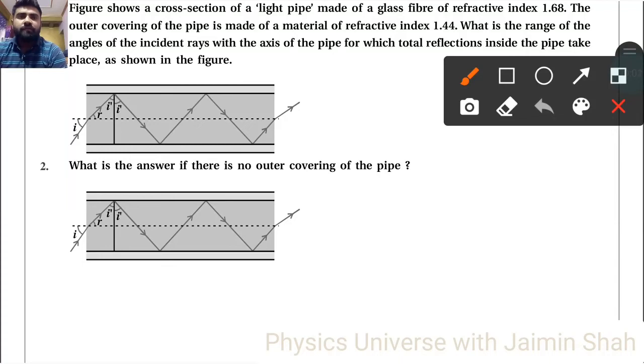This shows a cross-section of a light pipe made of a glass fiber of refractive index μ₂ = 1.68. The outer covering of the pipe is made of material of refractive index μ₁ = 1.44. What is the range of angles of the incident rays with the axis of the pipe for which total reflections inside the pipe take place as shown in the figure?